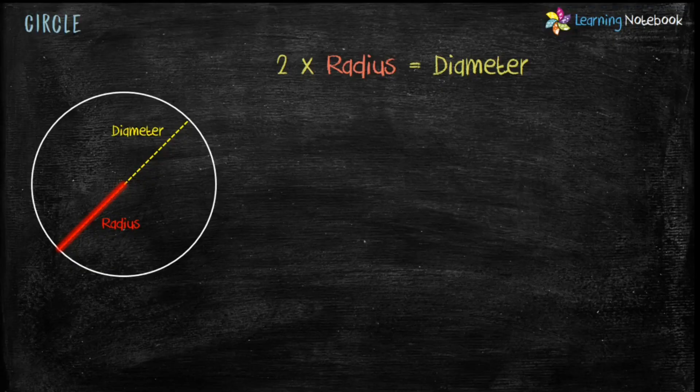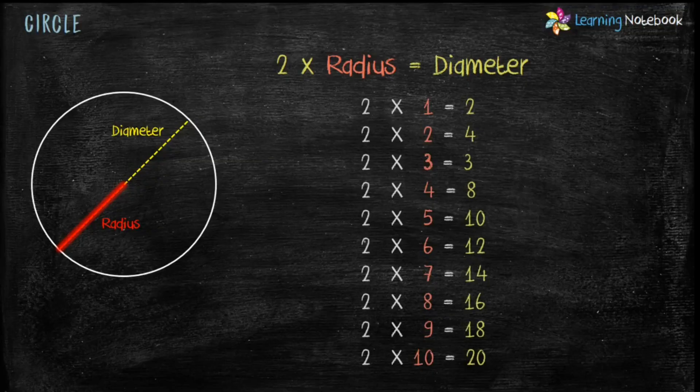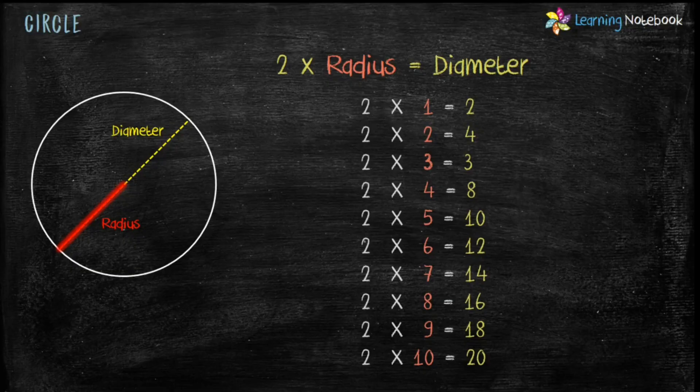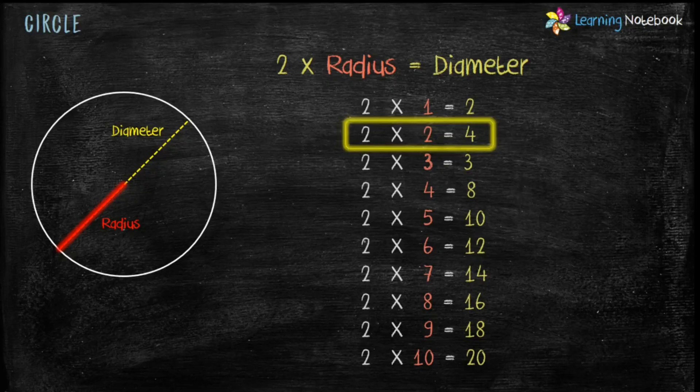You can easily remember the relationship between radius and diameter from the table of 2. Here, numbers in the red are radius and numbers in yellow are diameter. So, if radius of a circle is 2, its diameter would be 4. Similarly, if radius of a circle is 4, its diameter would be 8.